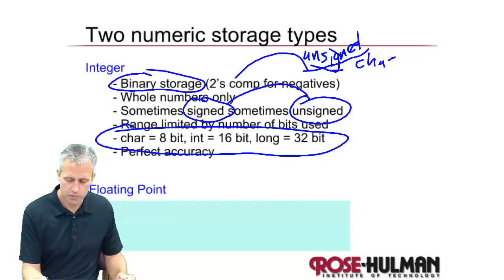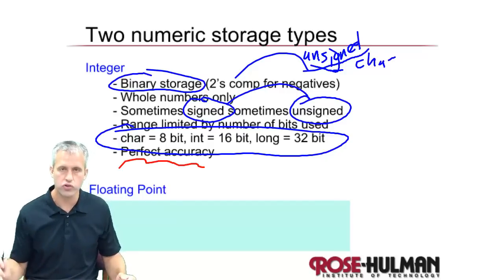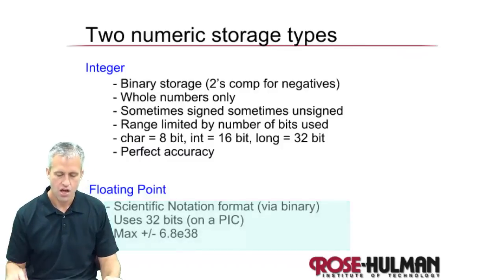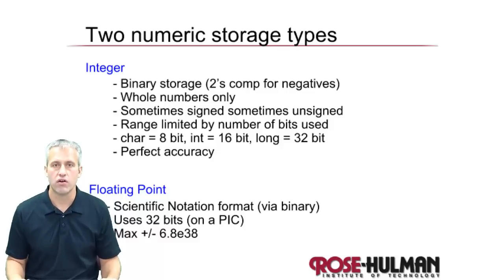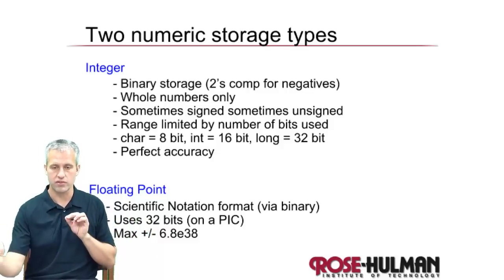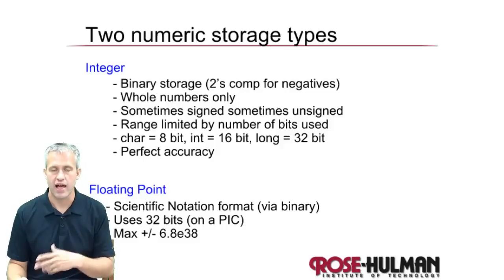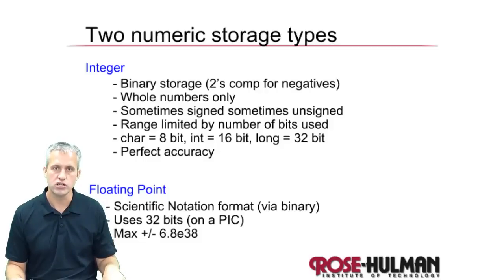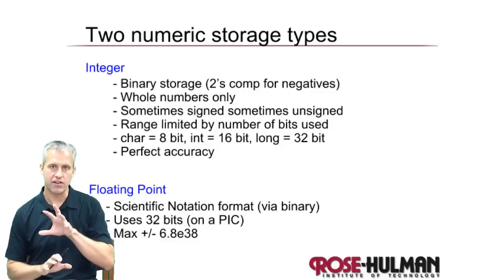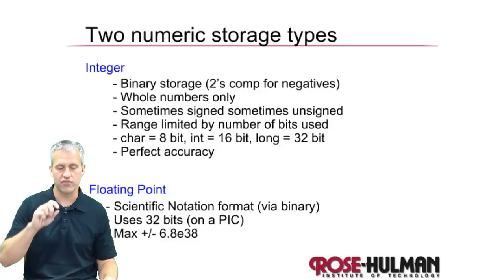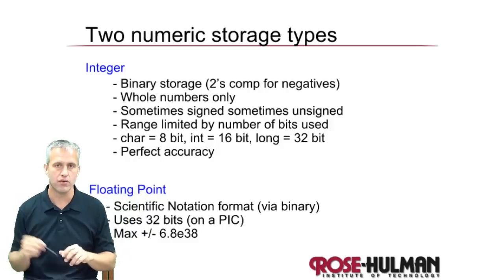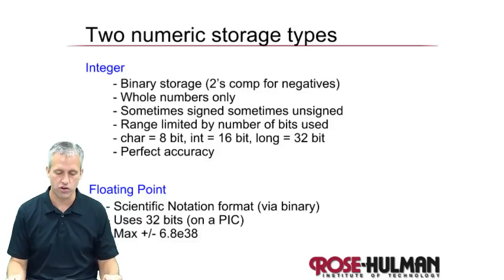Integers have perfect accuracy, which probably doesn't mean much until you look at how floats work. Floats are numbers with decimals — things to the right of the decimal point, like a half or a quarter. They are always stored in essentially scientific notation, but it's binary scientific notation. Instead of some number times 10 to the power of something, it's some number times 2 to the power of something — that's how they're internally stored.